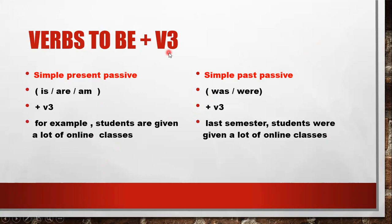وبعدين بتكون تعرفوا أنه أي جملة باسف بالحياة، بأي زمن - مضارع تام، مضارع تام مستمر، ماضي تام، ماضي تام مستمر، ماضي بسيط، مستقبل - كلها بتمشي على نفس المبدأ.